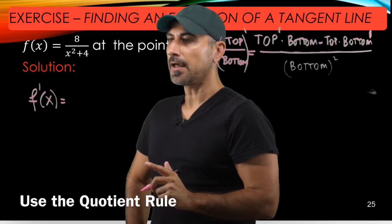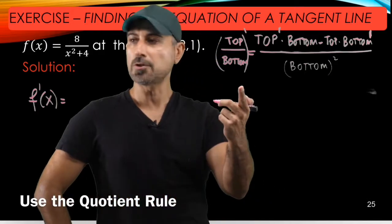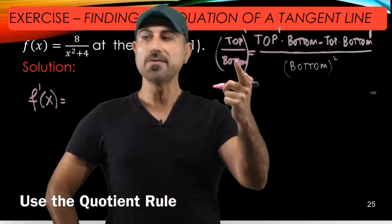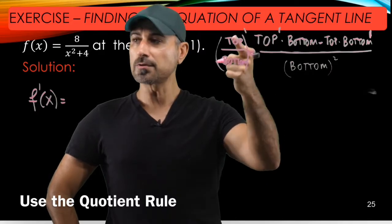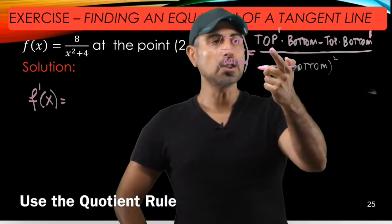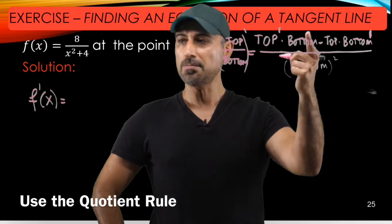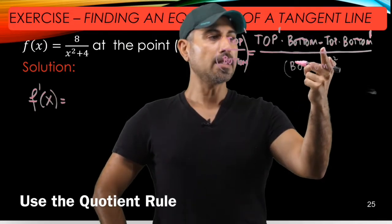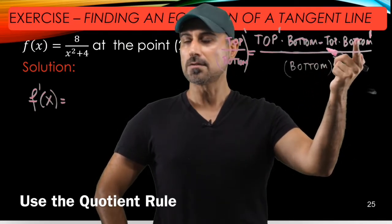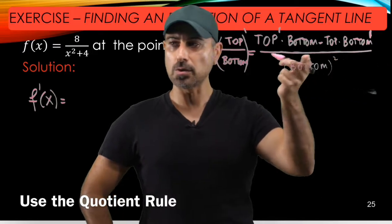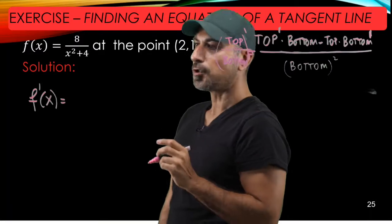To find f'(x) we are using the quotient rule. I just wrote the quotient rule here, so top divided by bottom prime, which is the derivative of this quotient, equals the derivative of the top times the bottom minus top times the derivative of the bottom, all divided by the square of the bottom.